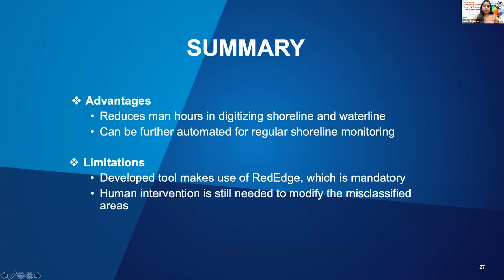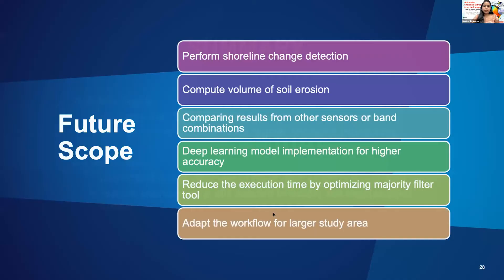To summarize, it reduces man-hours in digitization and it can also be further automated to regularly monitor the shoreline. It uses the red-edge sensor and still needs human intervention to modify the waterline. The results can be further used to perform shoreline change analysis and compute the volume of soil erosion. In addition, various other bands can be compared and a deep learning model can be developed for higher accuracy to extract the shoreline, reduce execution time, and the same methodology can be adapted for larger areas.